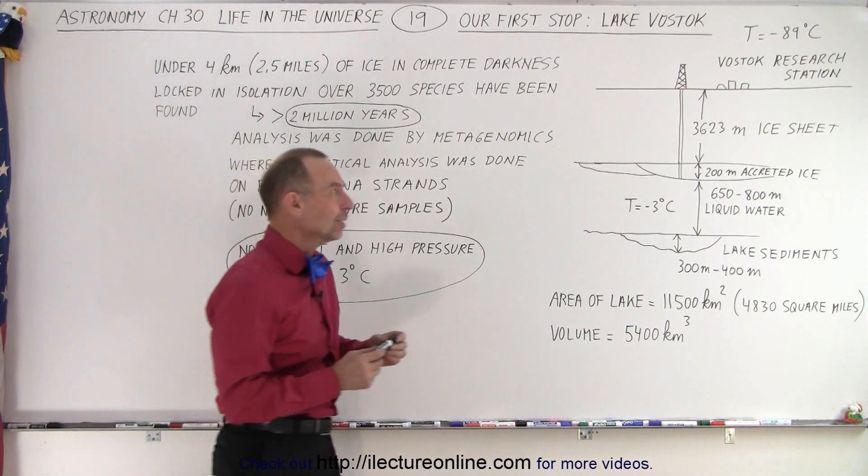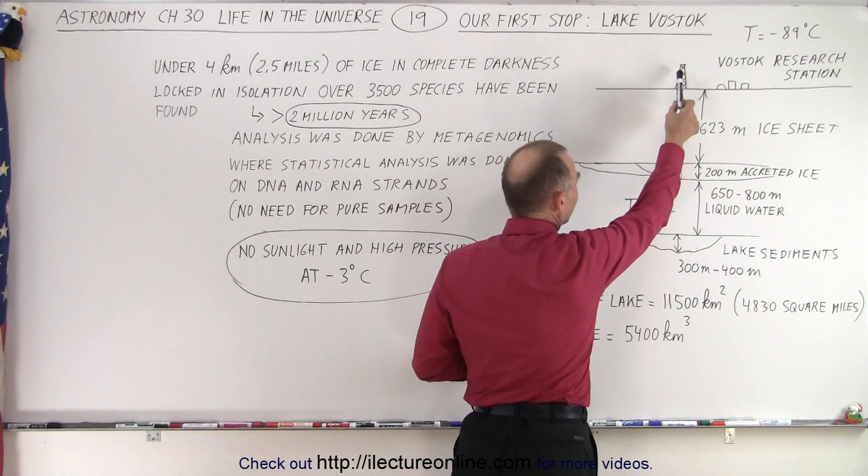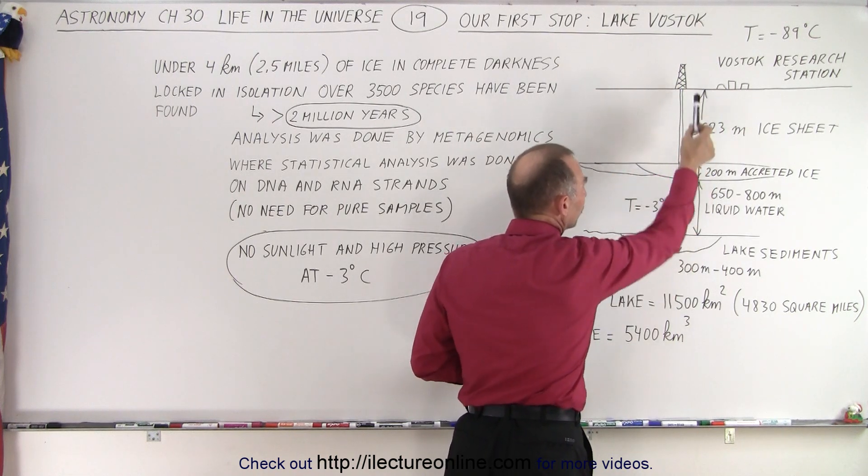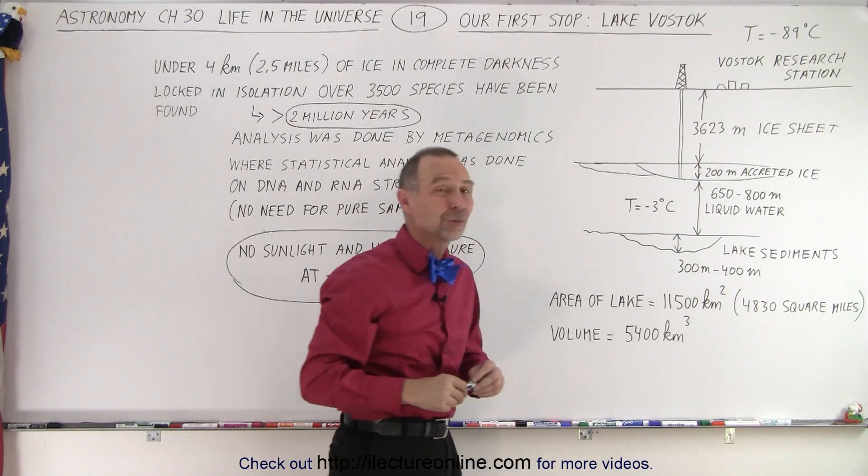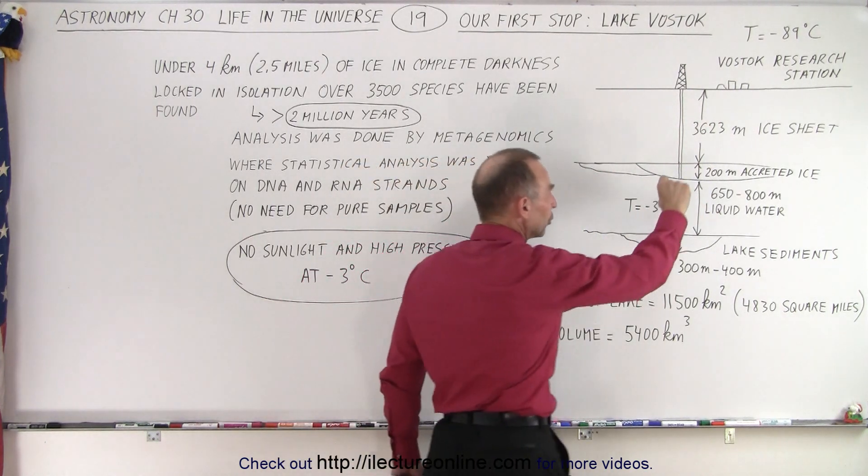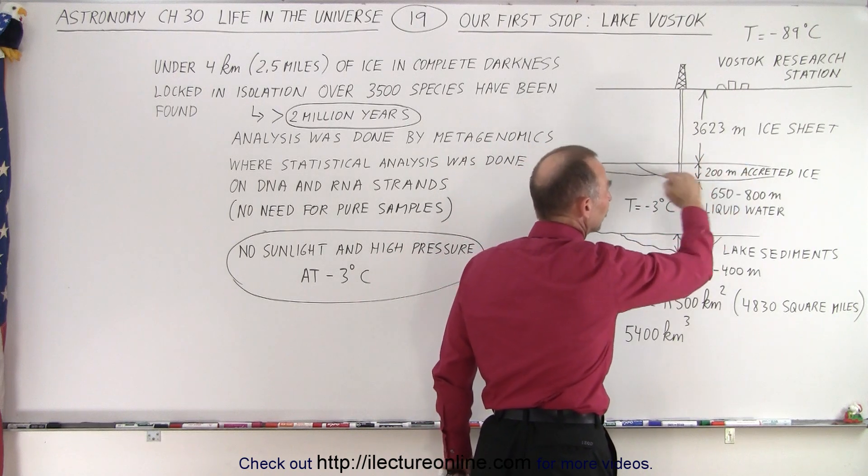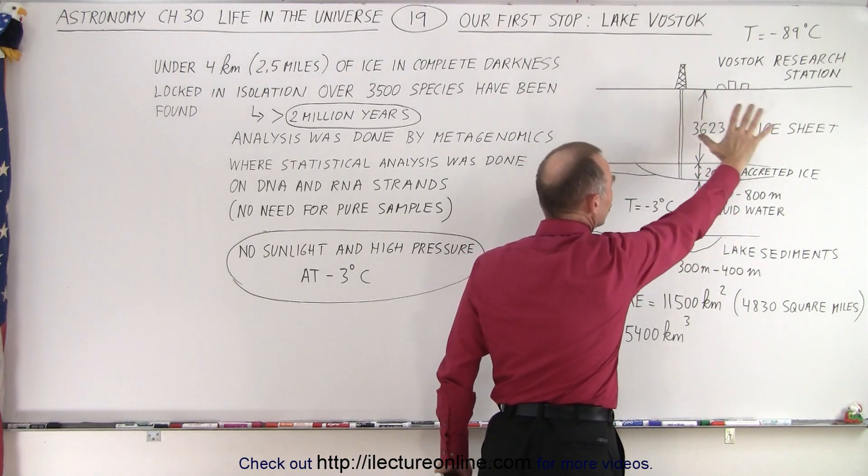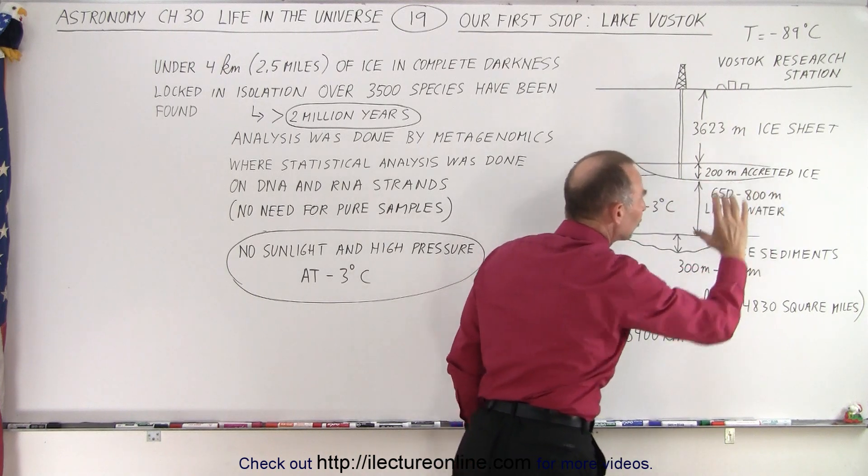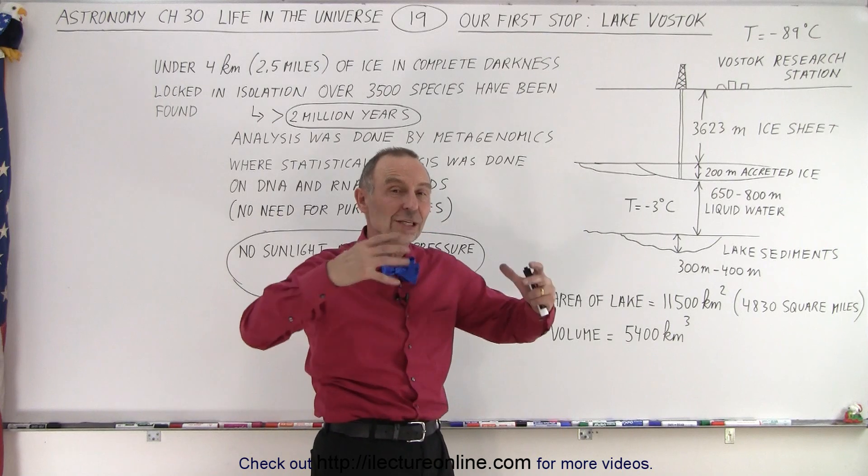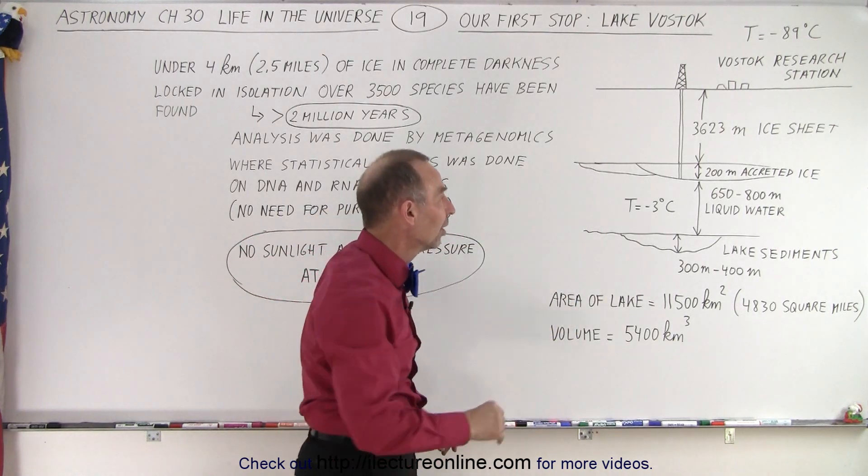They drilled down a core all the way through the ice sheet. The ice sheet was 3,623 meters thick, which is more than two miles thick. Then they had to go through an additional 200 meters of accreted ice adhered to the bottom of that huge ice shield. Below that was a large lake of liquid water, and it's liquid because of the enormous pressure of the ice sheet pushing down on it.